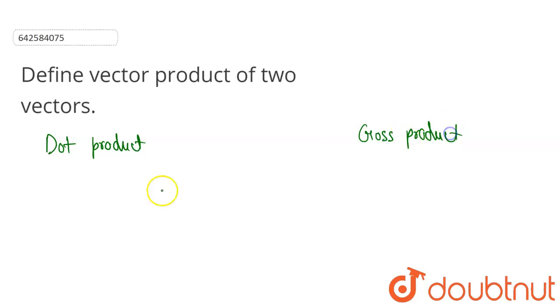So basically, dot product of two vectors gives magnitude only. Dot product of two vectors gives only magnitude but direction is not specified.